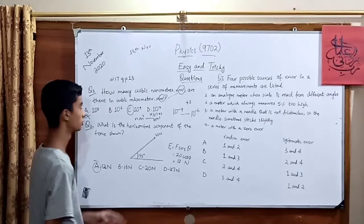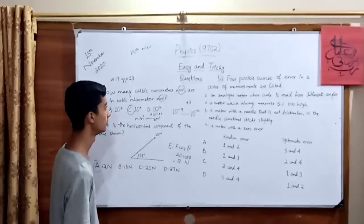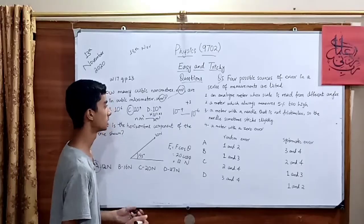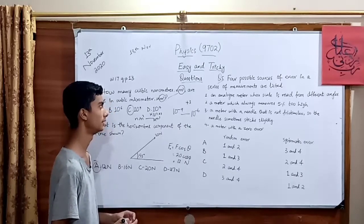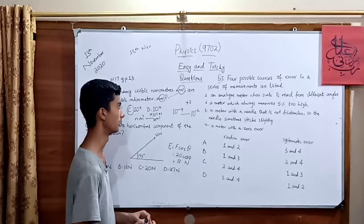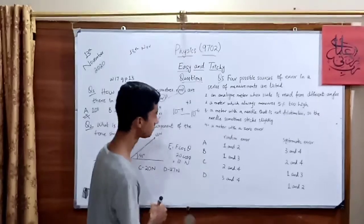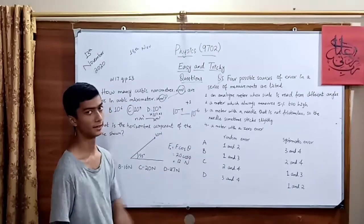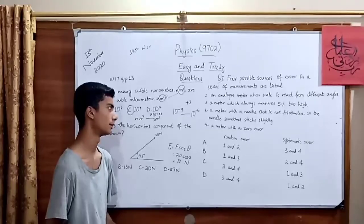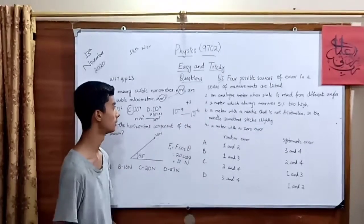And the most tricky question of winter 17, Q13, question number 5. Four possible sources of error in a series of measurements are listed. They have given measurements about some meters, and we are given answers about what is random error and what is systematic error.